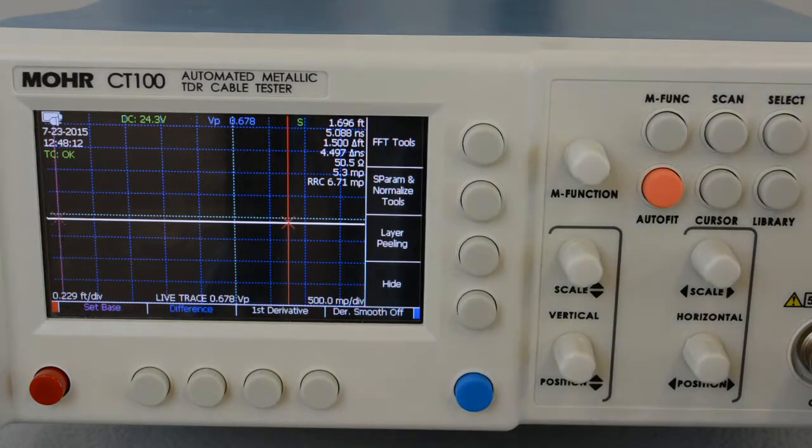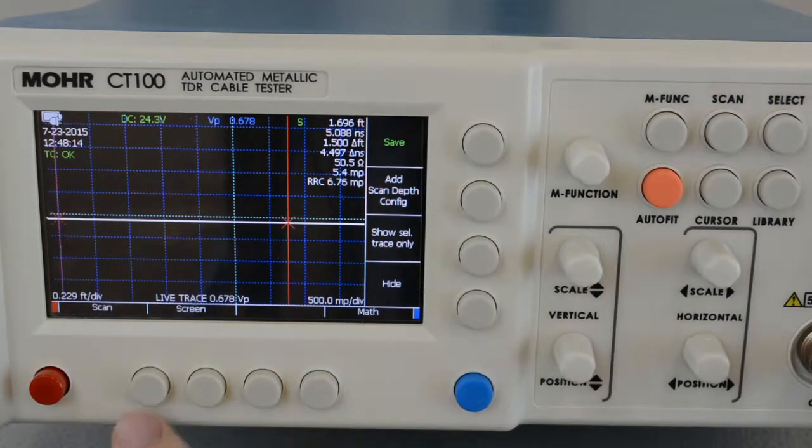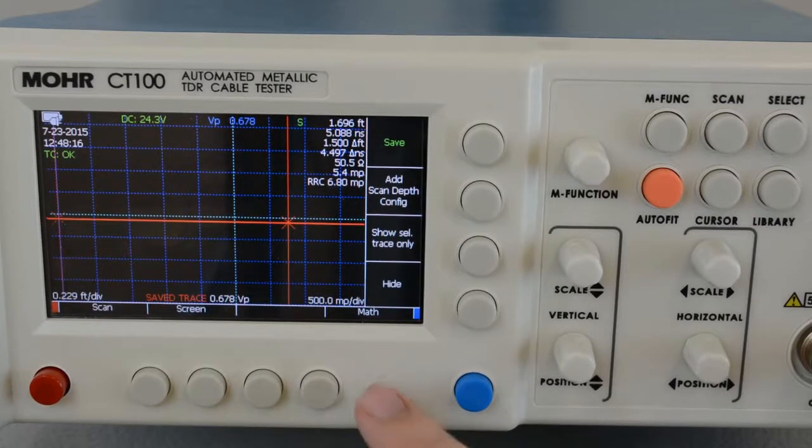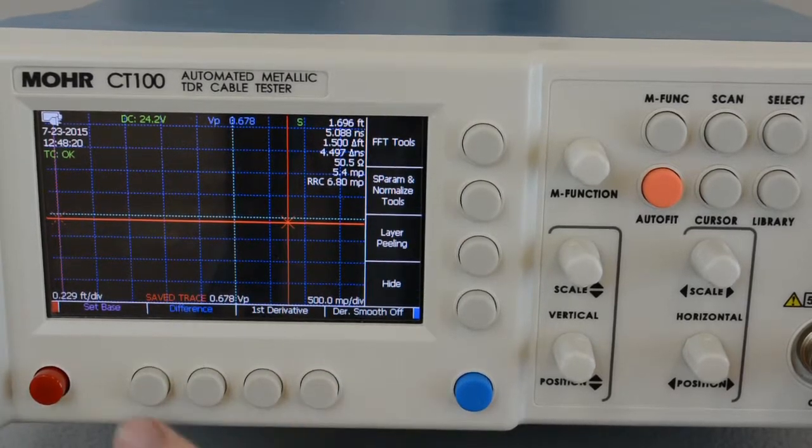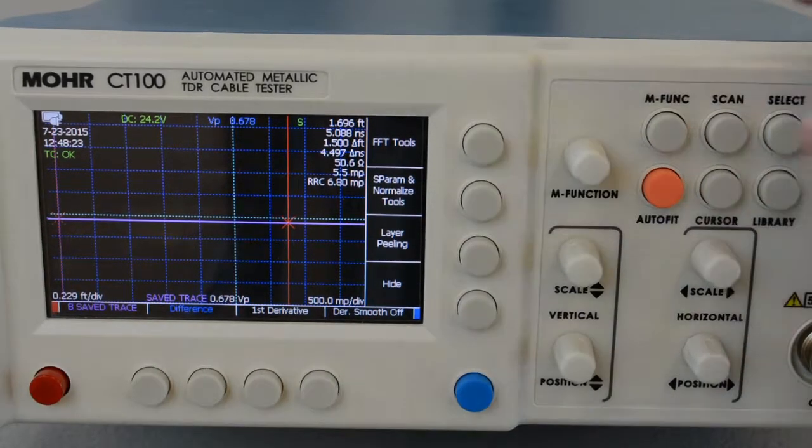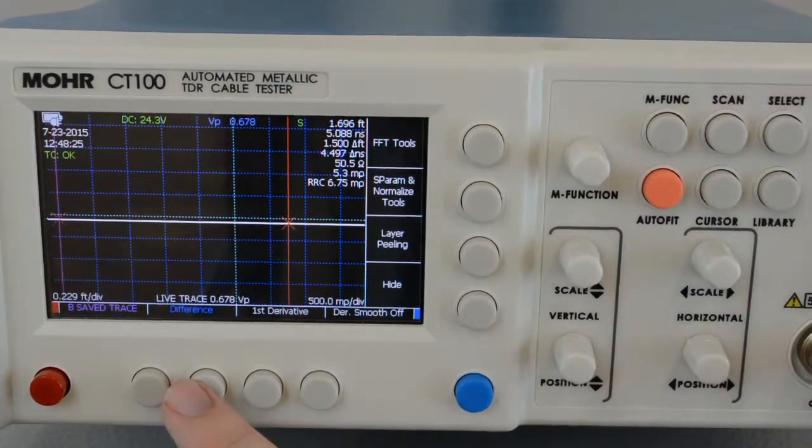Here I have a cable connected. I'm going to scan it. Press math, set the scan as the base, select the live trace and press difference.